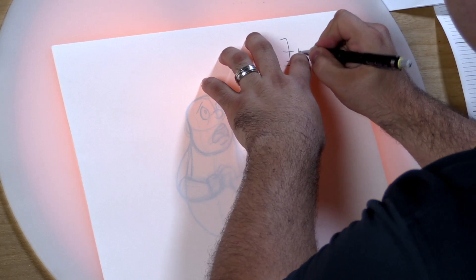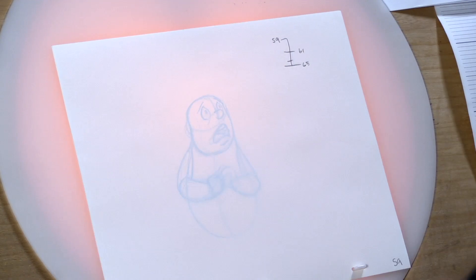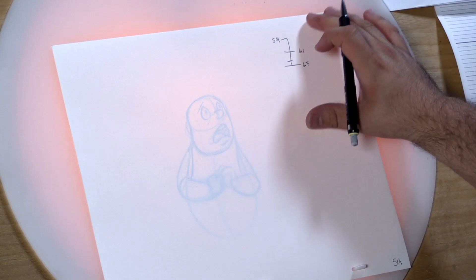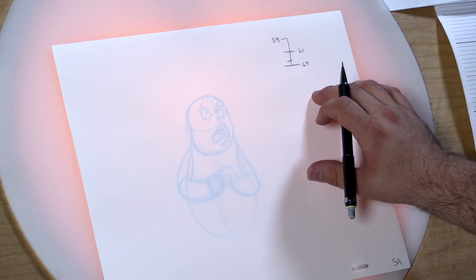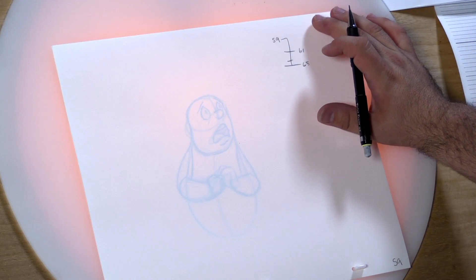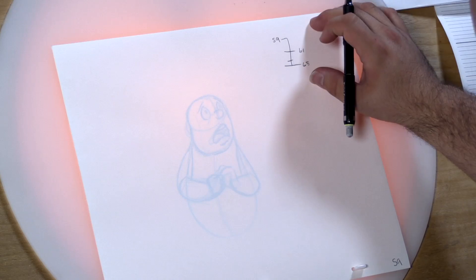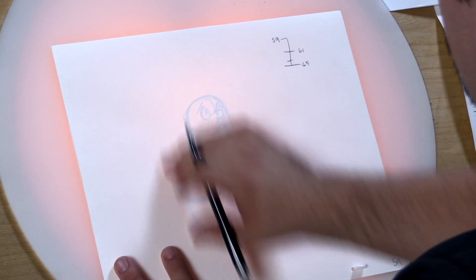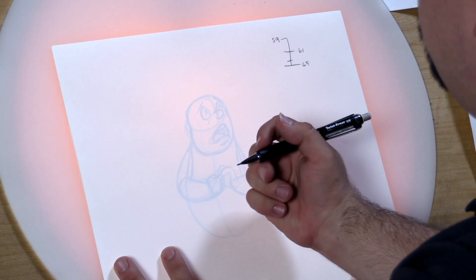Now you don't have to trace it exactly, but you want to make sure to keep it accurate to the original so that way we know down the line how we're going to use this chart. Now I'll talk more about timing charts in the how to animate your animation drawings in a later video, but right now let's talk about how to do cleanup.